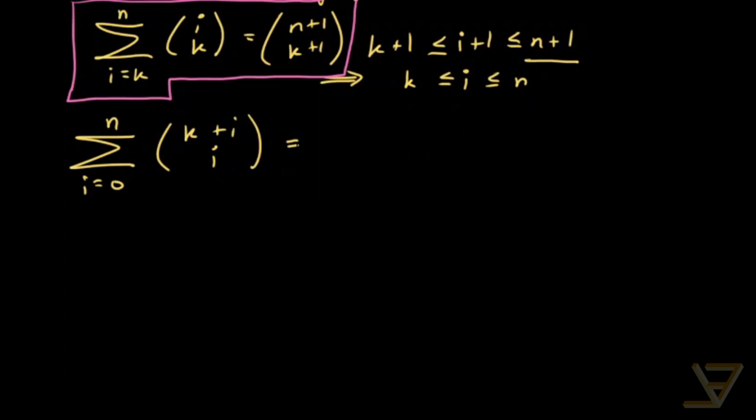And that equals to, if we change the indices, well we'll change the indices in just a second. But first let's use symmetry. So by symmetry we get i equals to zero through n, k plus i choose k. So notice that we had an i here and now we have a k over here.